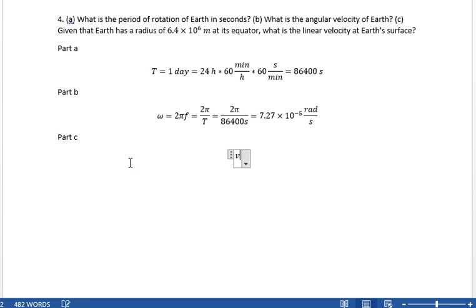Well, linear velocity is just omega r. Omega r. R, in this case, is 6.4 times 10 to the 6 meters. So we've got 7.27 times 10 to the minus 5th per second times 6.4 times 10 to the 6th meters.